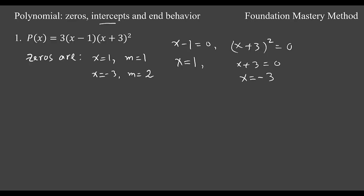So we can say zeros are x equals 1, and the exponent here is 1, so multiplicity 1. x equals negative 3, you have a square, so multiplicity 2. Later we will see that when the multiplicity is an odd number, it will cross the x-axis. If the multiplicity is even, then it will touch the x-axis.